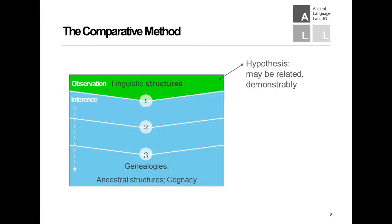Along the way there are many individual processes of inference that we apply. I'm going to simplify this and arrange them into three major steps that we perform in order, each time progressing from one kind of knowledge to the next on our way through this guiding diagram, which you'll see a few times.